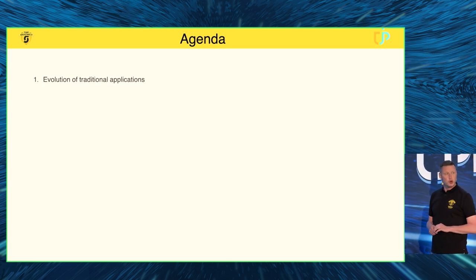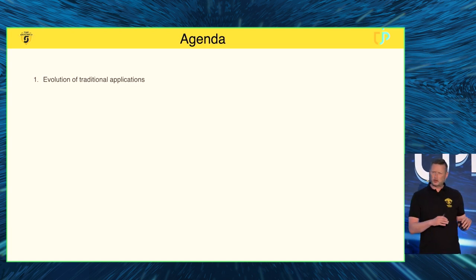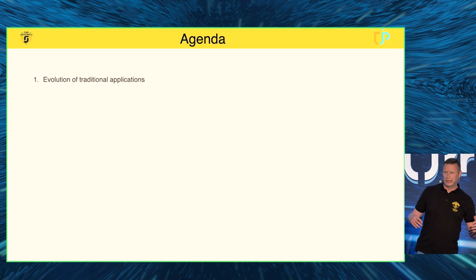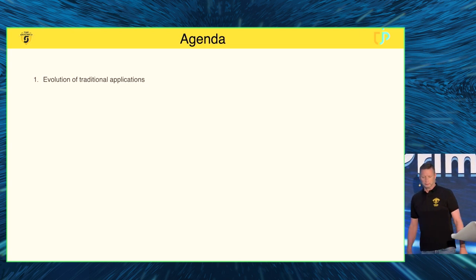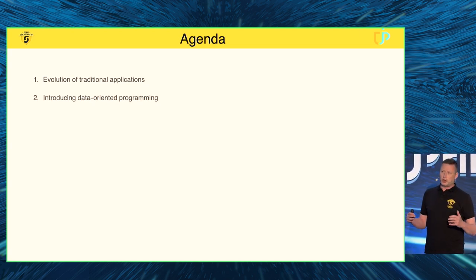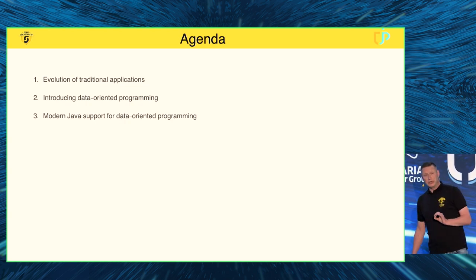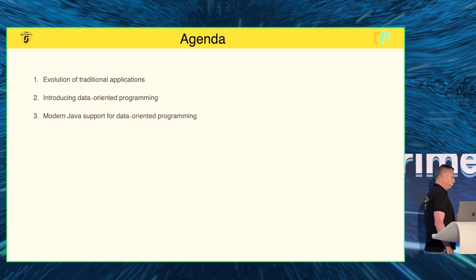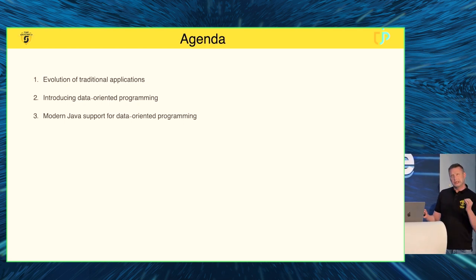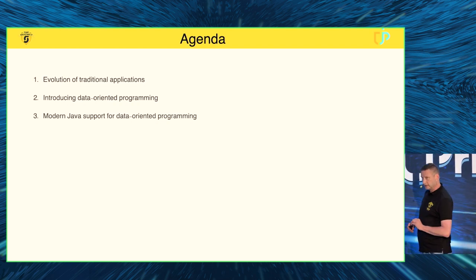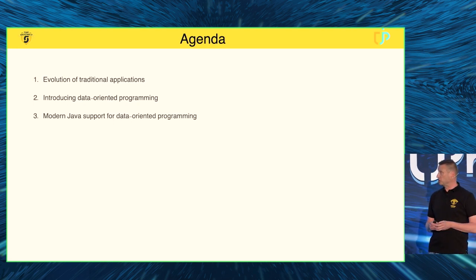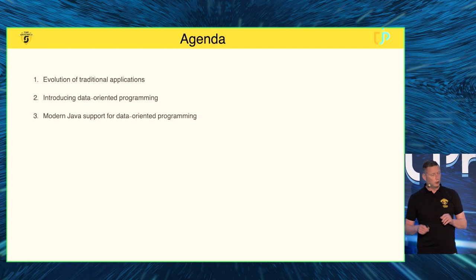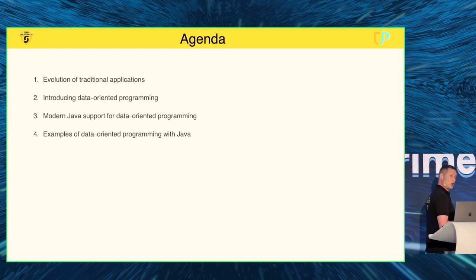The first part is going to be the evolution of how we normally develop our applications. The second part is a generic introduction to data-oriented programming — not specific to Java, just the principles. In part three, we'll look at how Java supports this paradigm, because there have been a lot of new features added to the Java language in recent years. And in the final part, we'll look at some code examples.